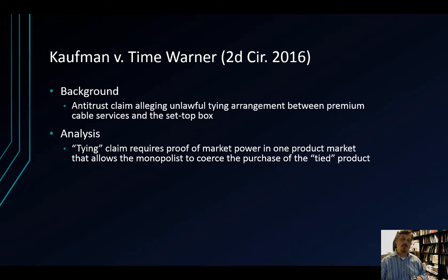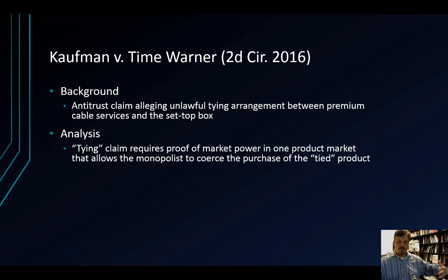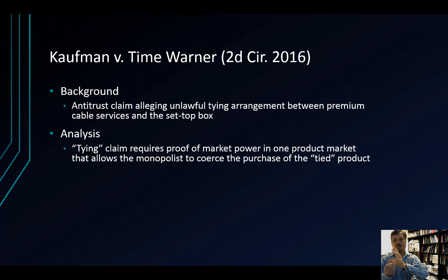The idea of a tying arrangement is that there are at least two separate markets, and the defendant has market power — a dominant position akin to a monopoly, allowing the supplier to price consistently above a competitive market price. A party has market power in one market, and that allows them to compel consumers to purchase some product or service in a related market. For example, if you have a dominant position in coal, and power plants need coal and industrial burners, you might say: if you want to buy my coal, you have to buy my burner — tying the two things together.